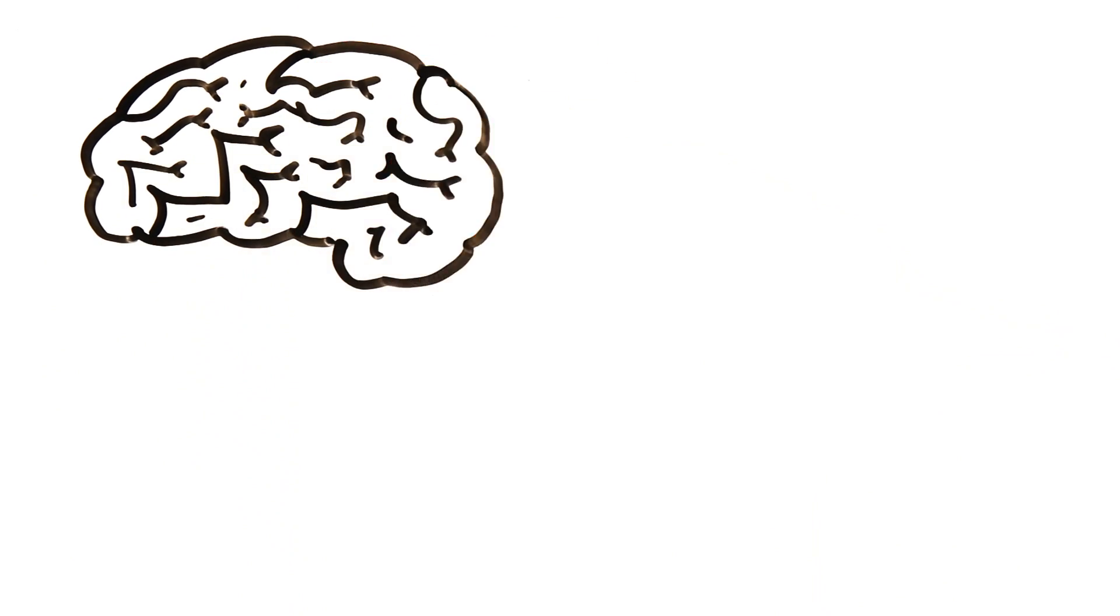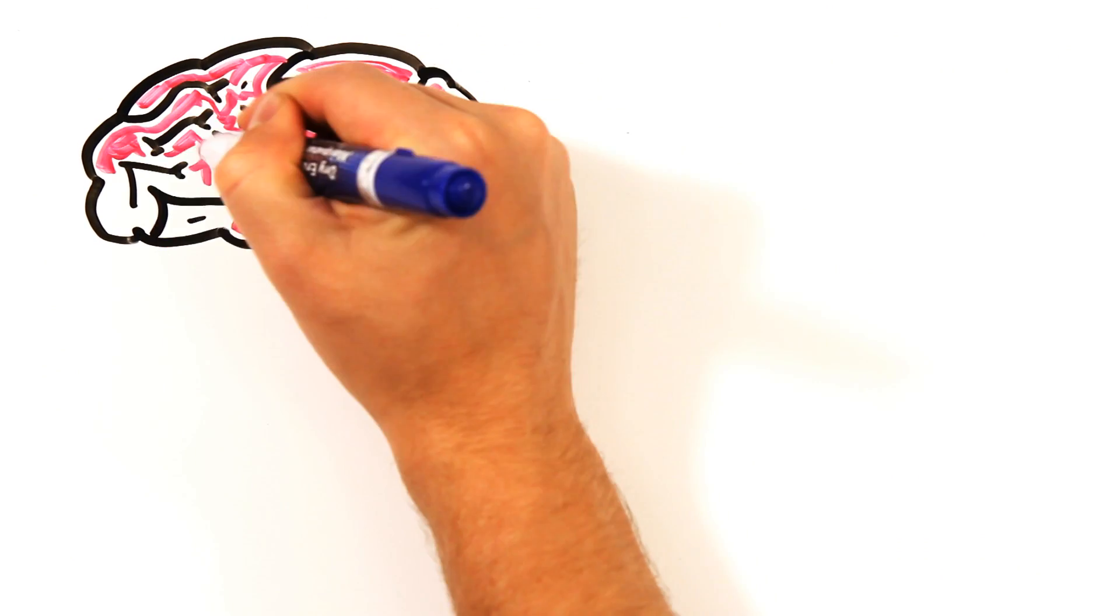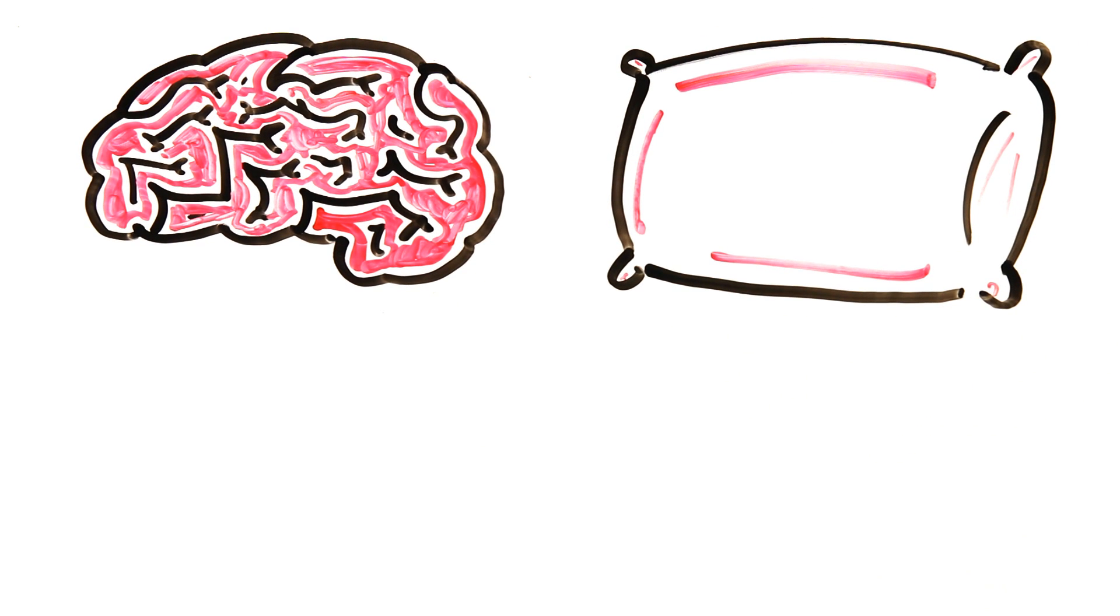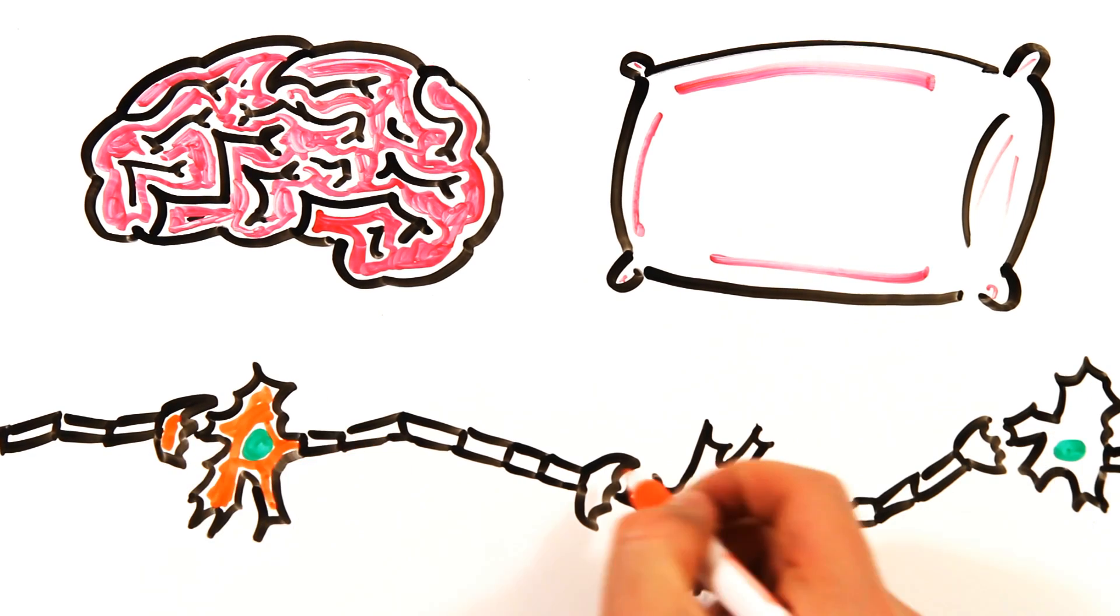And while the brain may seem small, all those wrinkles are for a good reason. Spread it all out, and the brain would be about the size of a pillowcase, which is great for the trillion nerves powering your memory.